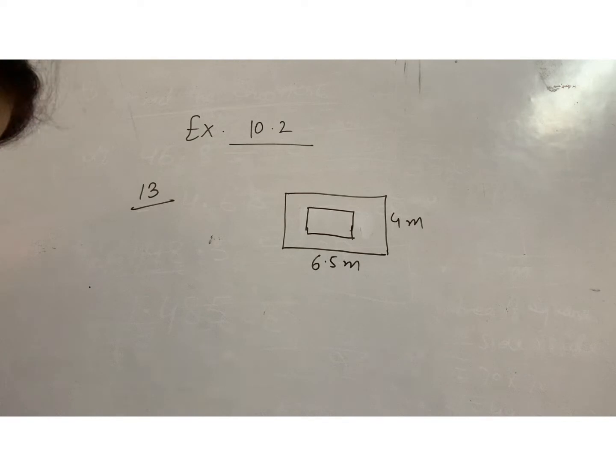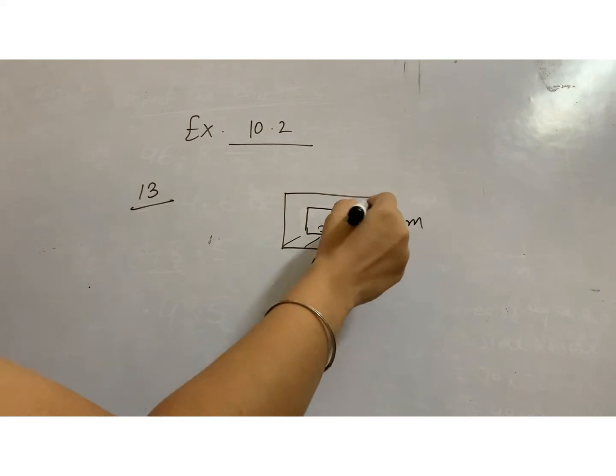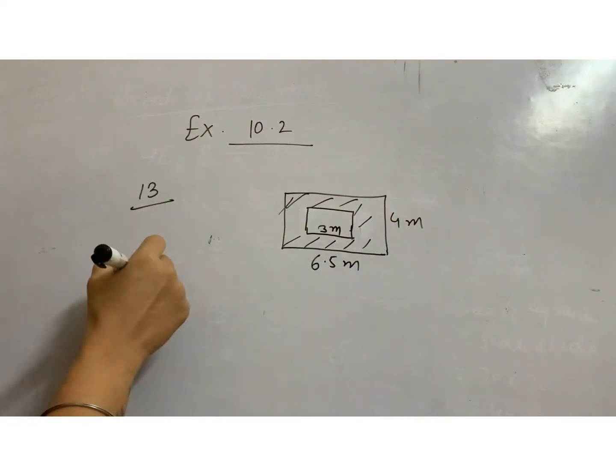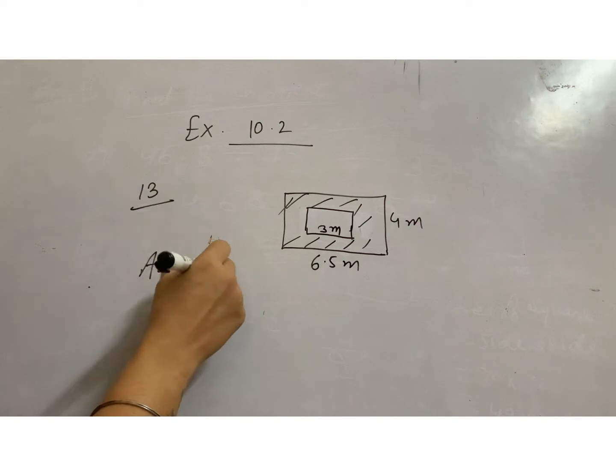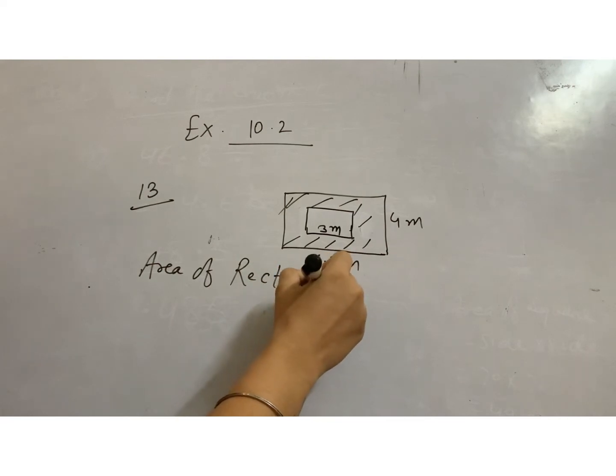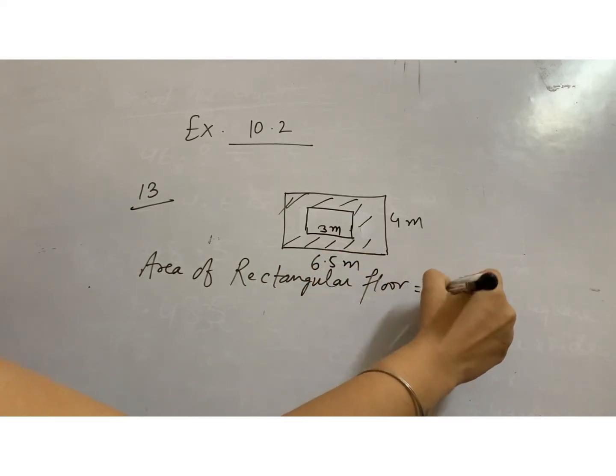Now they are asking for the remaining area. So from the area of rectangle we will subtract the area of square. Area of rectangular floor, which is length into breadth, 6.5 multiply 4. 4 fives are 20, 4 sixes are 24, 24 plus 2, 26 meter square.